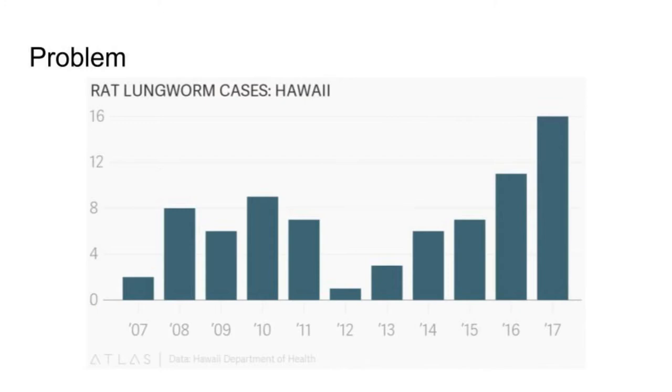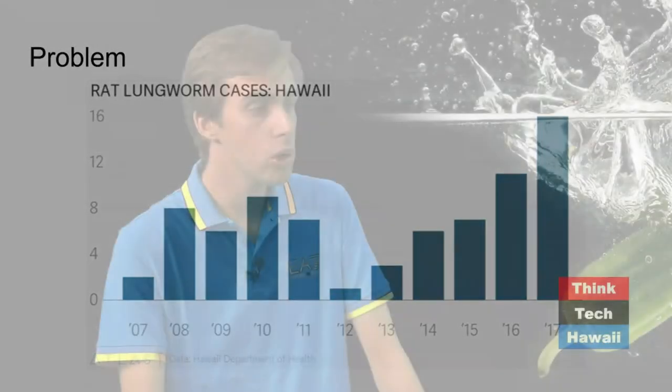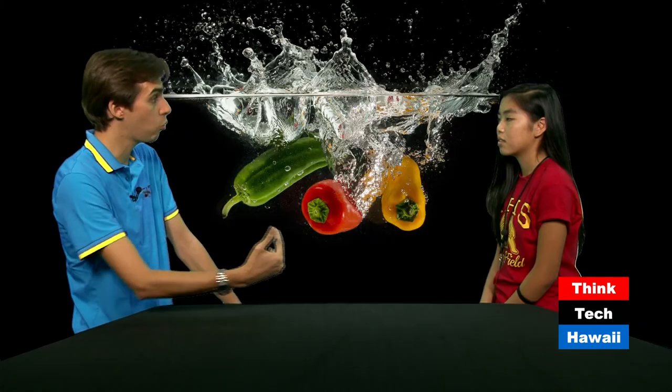You mentioned that the problem here in Hawaii is an increasing number of cases every year. We have a slide showing this increase. Over the past 10 years, the numbers have been increasing, and in 2017 we had the most number of cases — 16 or 17 cases just last year. This seems to be a growing problem. Your science project for the Hawaii State Science and Engineering Fair was to see whether people are actually aware of this issue. Yes, I wanted to know whether people had heard about this disease and how much they actually knew about it.